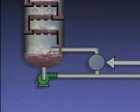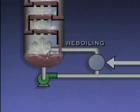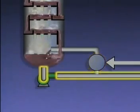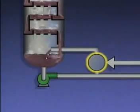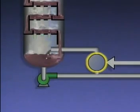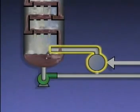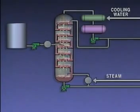Another method used to maximize product purity is called reboiling. The bottoms liquid drawn off from the tower is sent to a heater called a reboiler. The rest of the bottoms liquid is sent to storage or to other units in the plant as the tower's bottoms product. The reboiler heats the liquid it receives so that a mixture of vapors and liquid is formed. Depending on the system, either vapors or the mixture of vapors and liquid is then reintroduced into the tower. The hot vapors cause any lighter fractions in the liquid at the bottom to vaporize and move up the tower, reducing the amount of lighter fractions in the bottoms product.